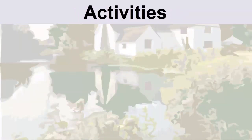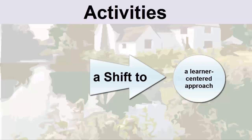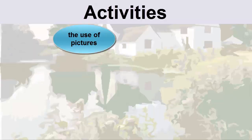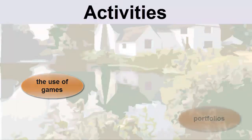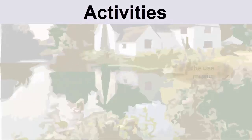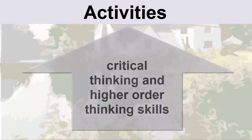In terms of activities, there should be a shift from teacher-centeredness to a more learner-centered approach. Teachers can use classroom discussions, pictures and graphs to target students with spatial intelligence and visual learning styles, maps, games, and music or song lyrics to target students with musical intelligence. Teachers should involve students in activities that require critical thinking and higher-order thinking skills.